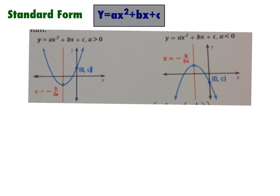Now when a is a positive number, so a is greater than zero, we have a happy parabola. It's smiling. And when a is negative, a is less than zero, then it's frowning and we have a sad parabola.